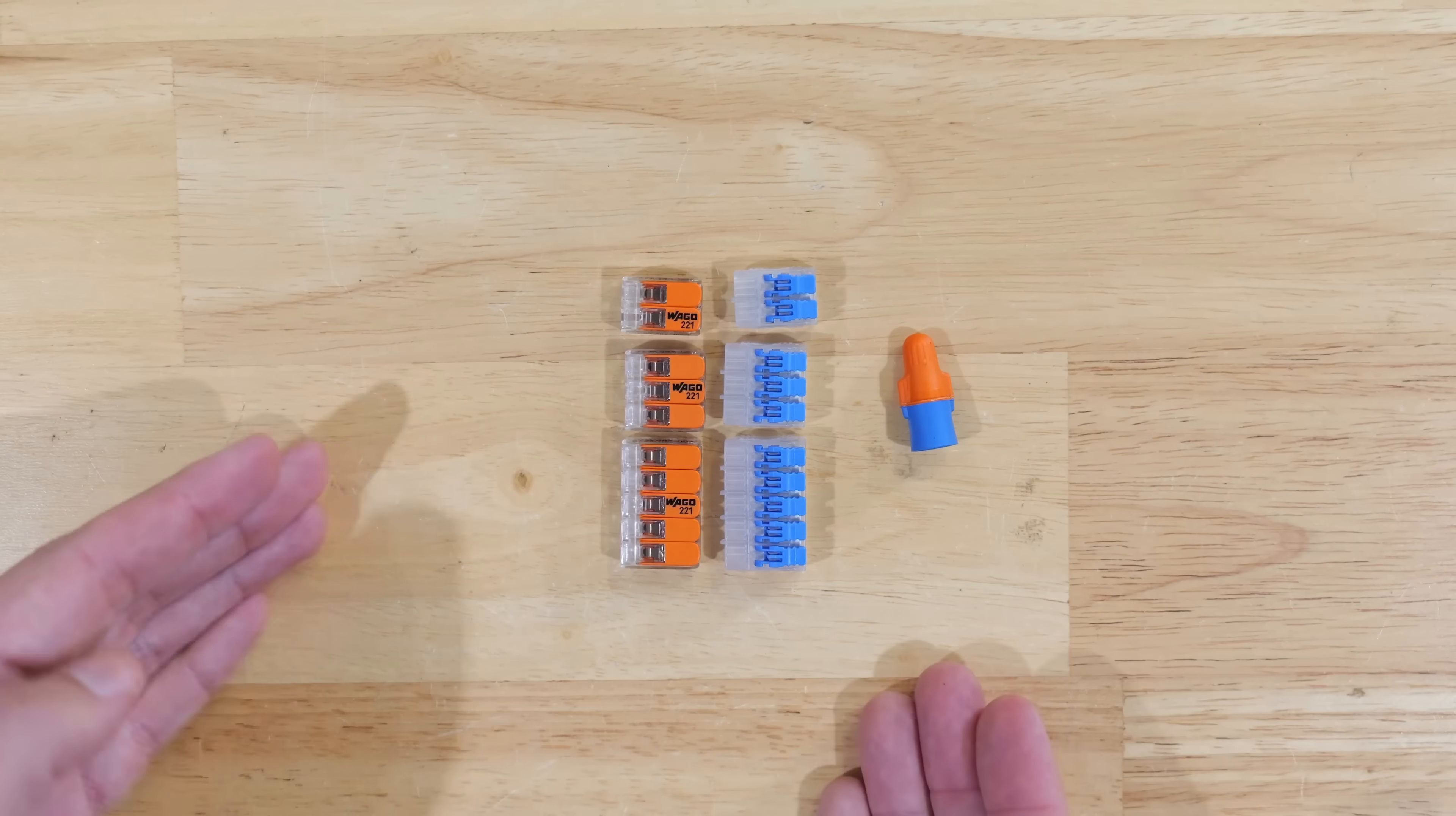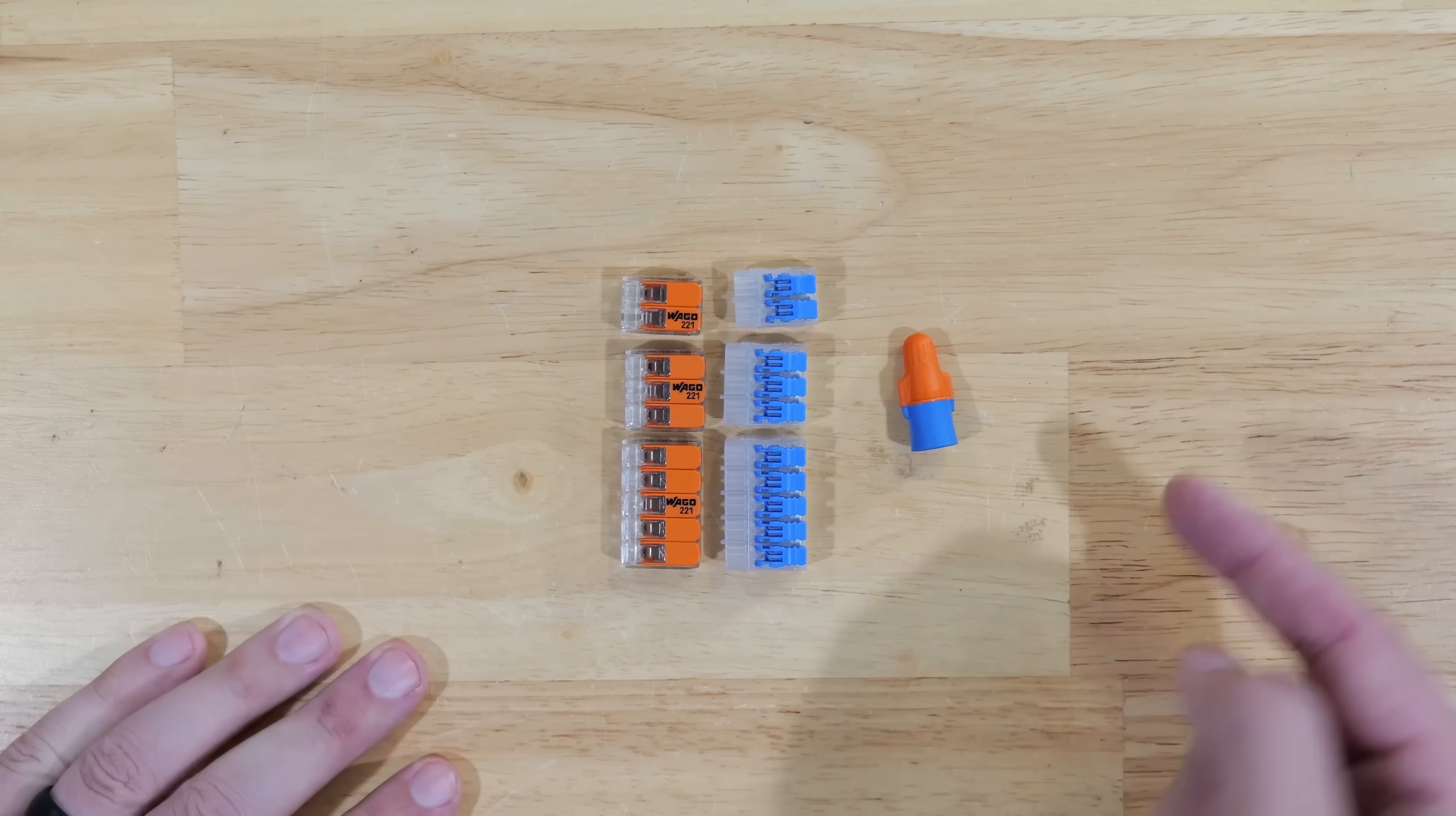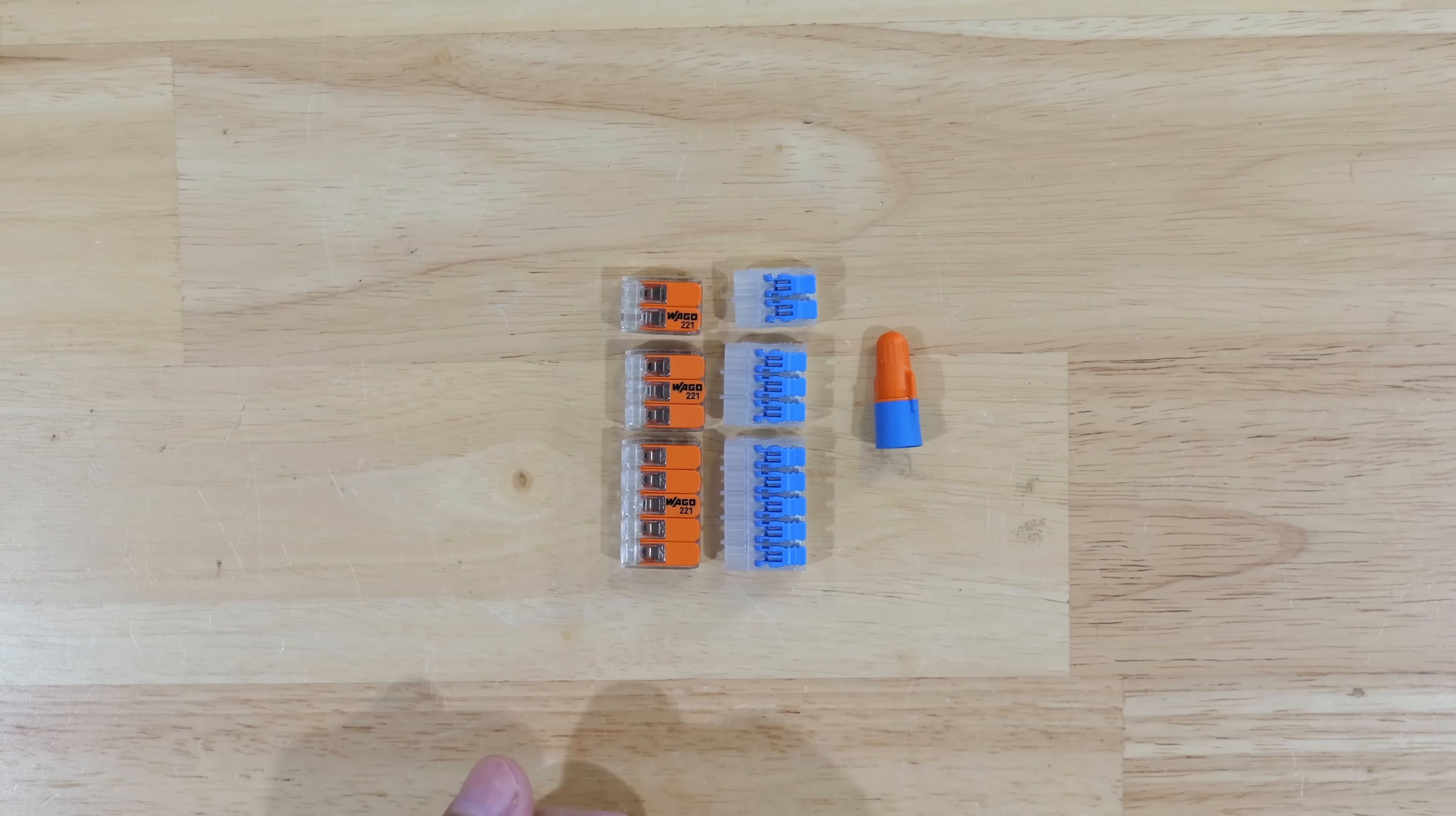When it comes down to pricing and looking at these different options, of course the prices are going to vary by how many ports you buy, which model you buy, where you buy it from. But overall, wire nuts are always, always, always going to be the cheapest option. And I think that is a big reason why here in the United States we're still using wire nuts a lot, because they are substantially cheaper than any of the lever nut connections that are out there.